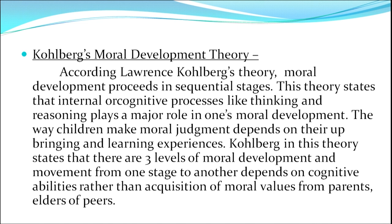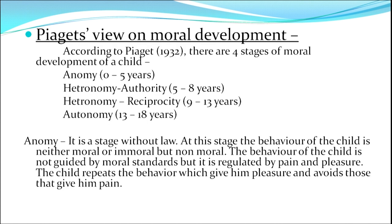The second theory is Lawrence Kohlberg's theory of moral development. According to Kohlberg, moral development proceeds in sequential stages. This theory states that internal cognitive processes like thinking and reasoning play a major role in moral development. The way children make moral judgments depends on their upbringing and learning experiences. Kohlberg states that there are three levels of moral development, and movement from one stage to another depends on cognitive abilities rather than acquisition of moral values from parents, elders or peers.